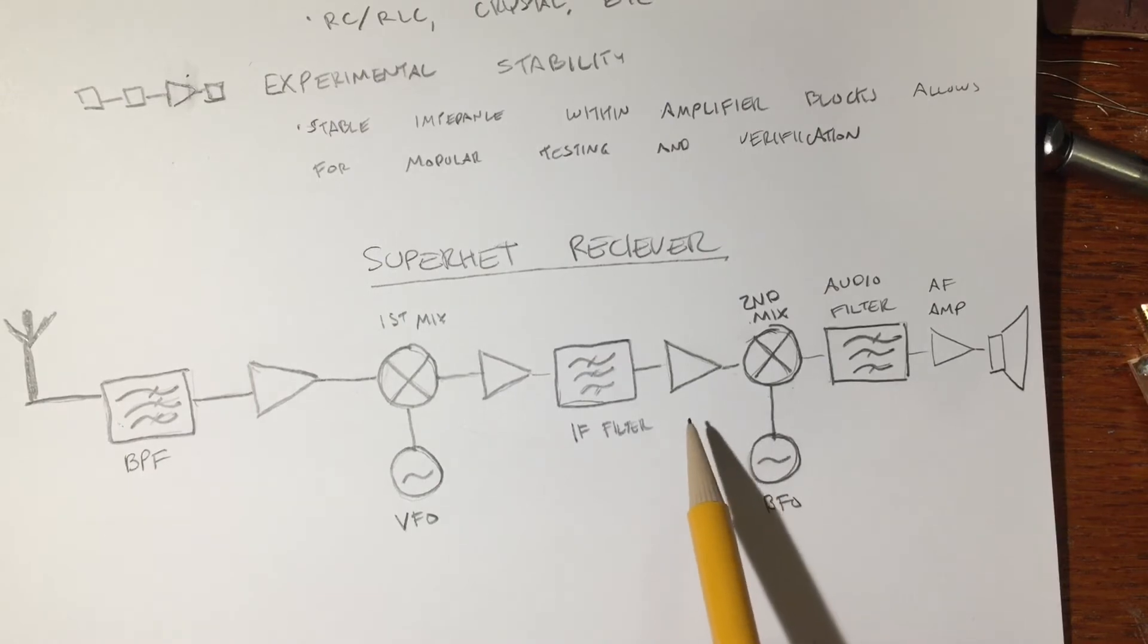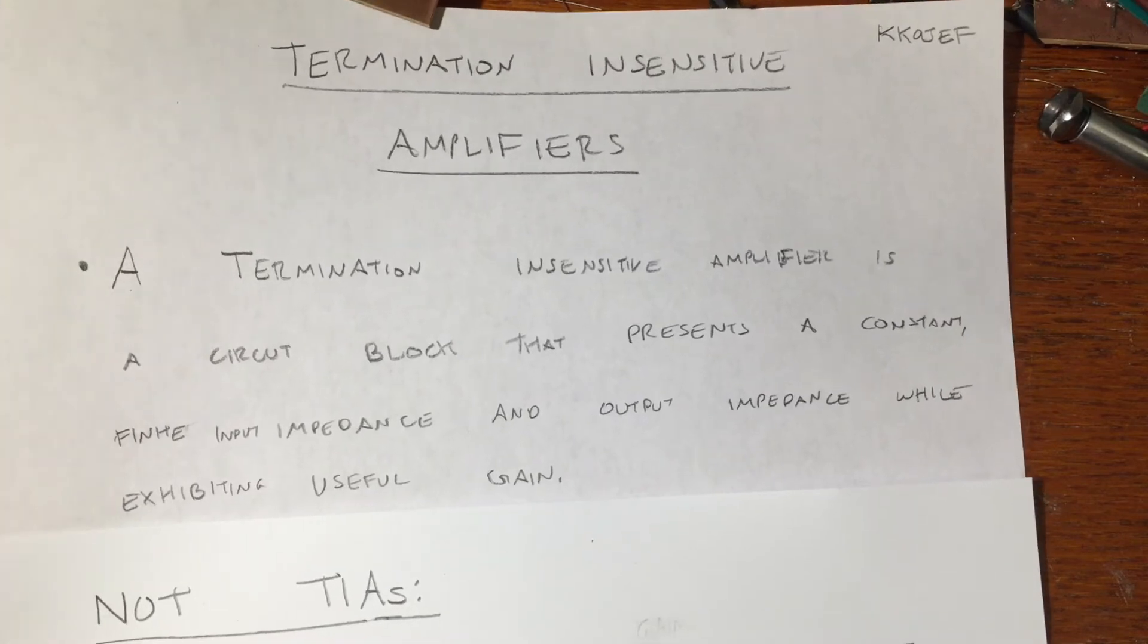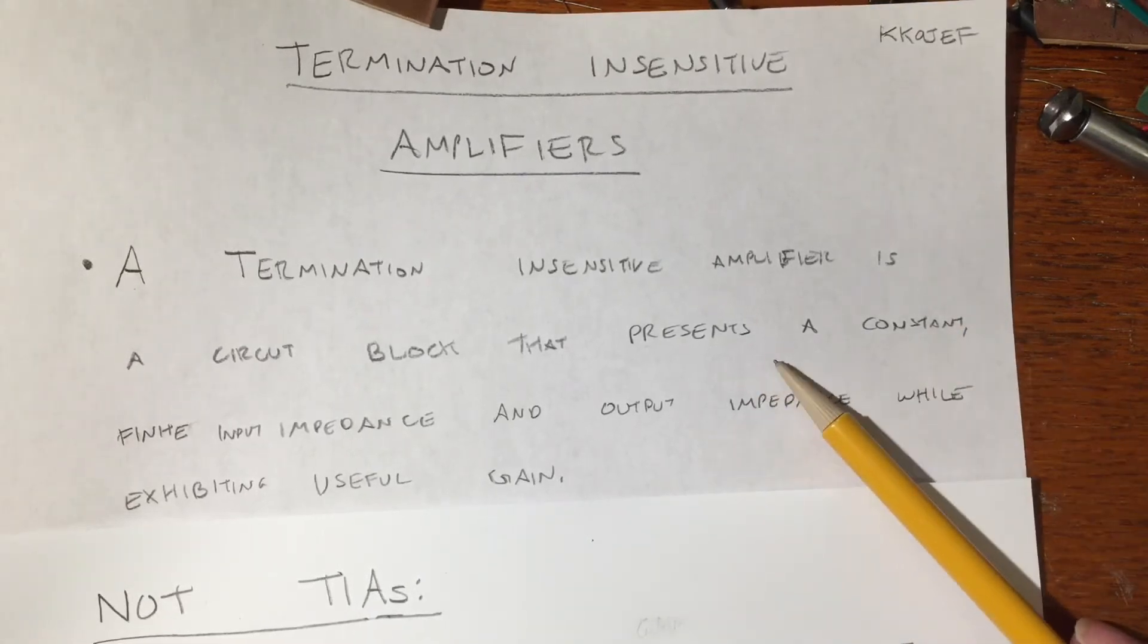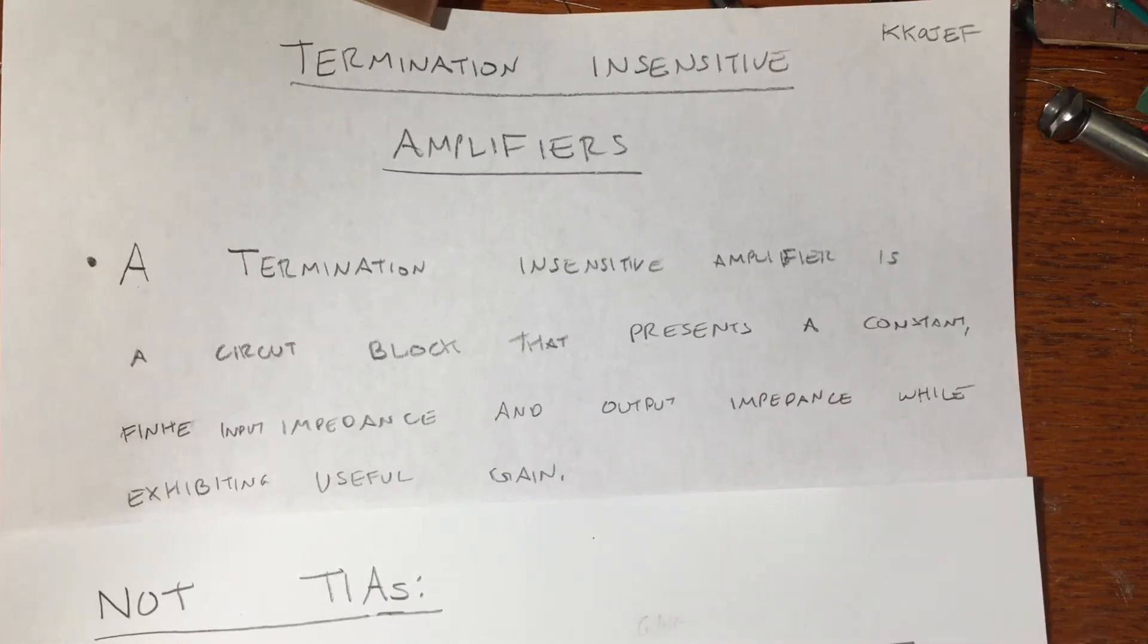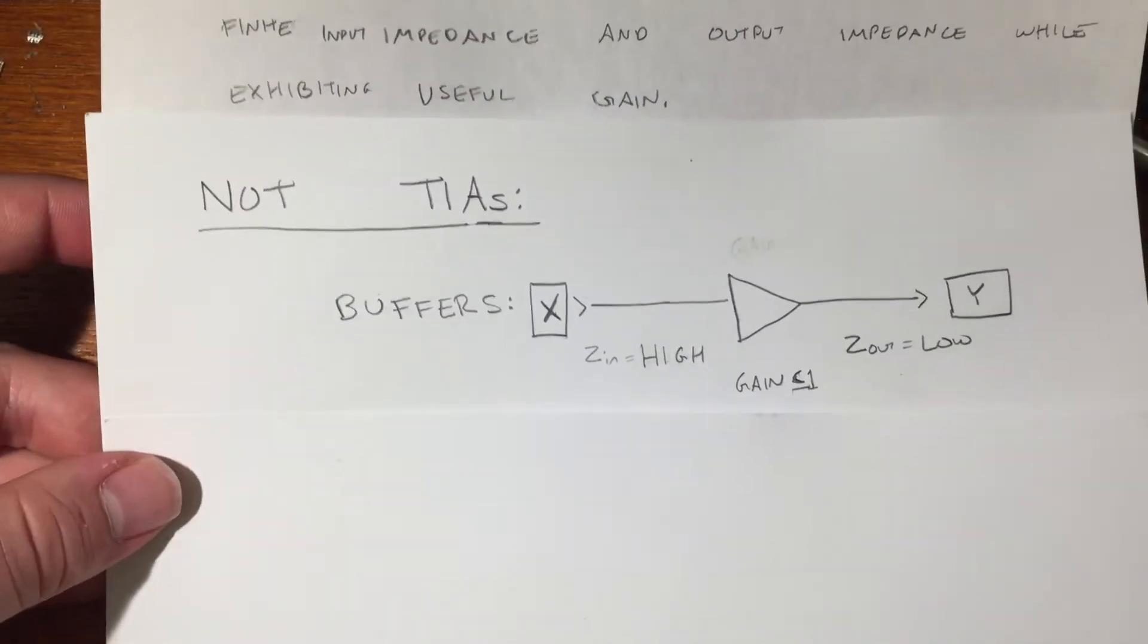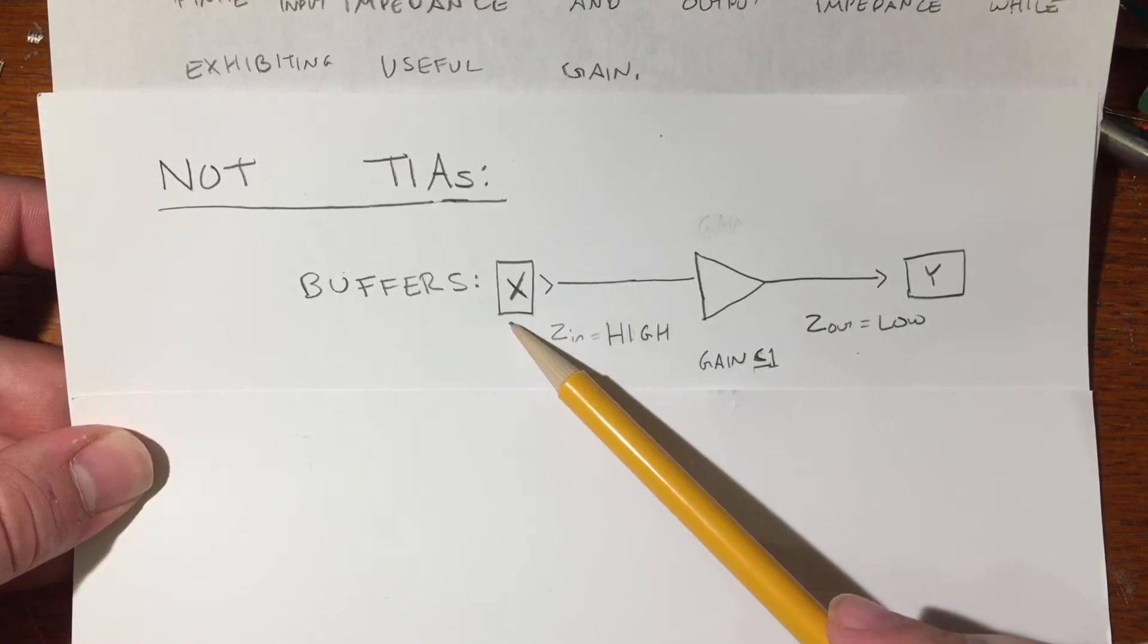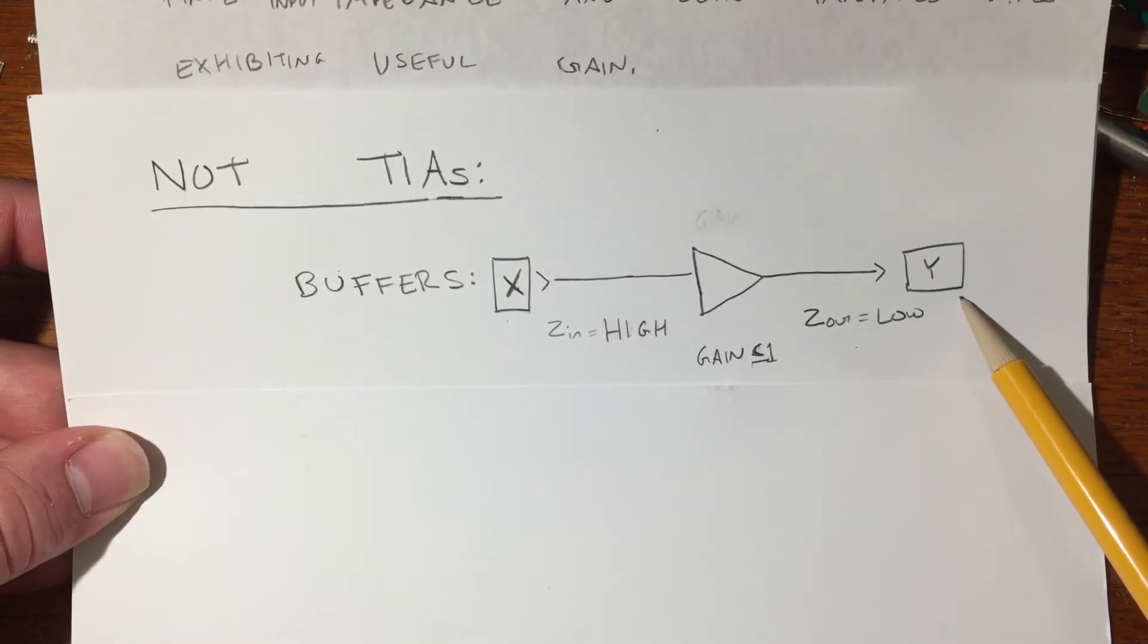So before we get to taking a look at some termination insensitive amplifier circuitry, I wanted to run through a few things that aren't termination insensitive amplifiers. Remember we said that a TIA is a circuit block that presents a constant input impedance and output impedance while exhibiting useful gain. So some things that don't qualify include your classic buffer circuits. And speaking generically here, a buffer is going to be something typically with a high input impedance that's not going to unnecessarily load the earlier parts of your circuitry and would have a low output impedance so it doesn't have a problem driving the later parts of your circuitry.